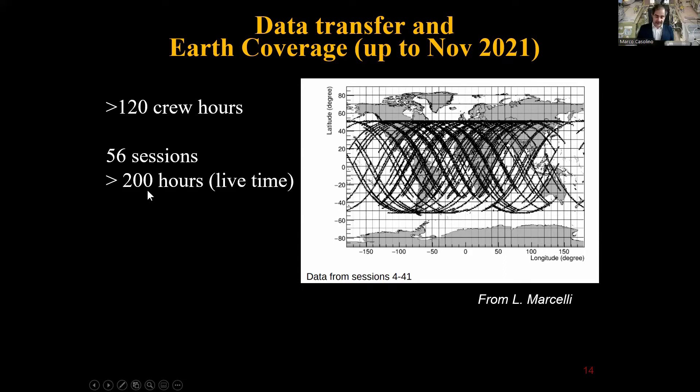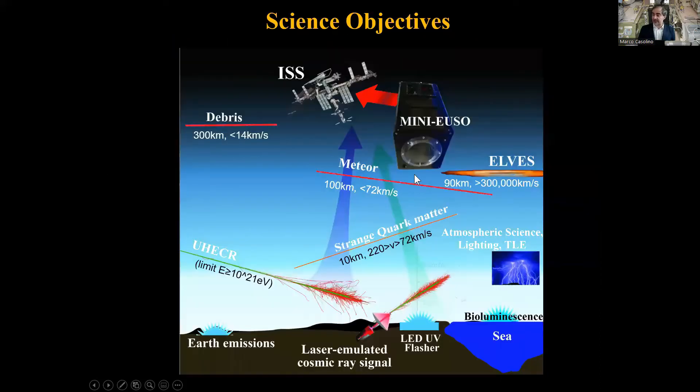We had a huge amount of crew time, more than 120 hours for putting, removing, and sending the data over 56 sessions and ongoing, for a total of 200 hours of lifetime. This is just the night time - 400 hours of data acquisition, of which 50-60% is too bright and we don't take data. But the time we were really taking data which was dark was 200 hours. This plot from Laura Marcelli shows how we covered the hemispheres. The eastern part, Japan and the Pacific, is less covered because the astronauts turn on the instrument before they go to sleep at 6:30 UTC time.